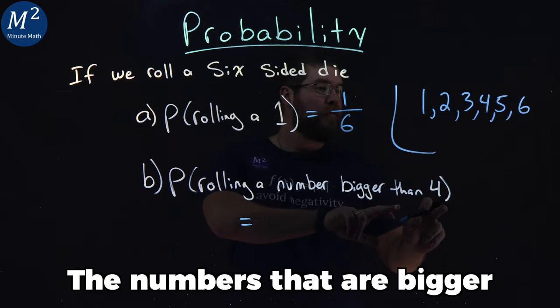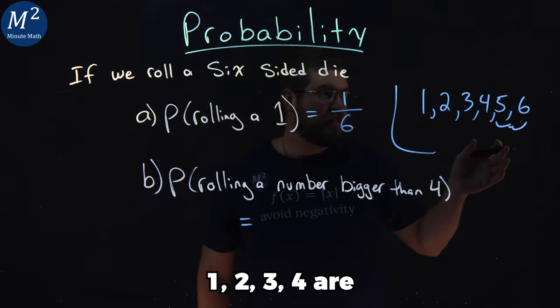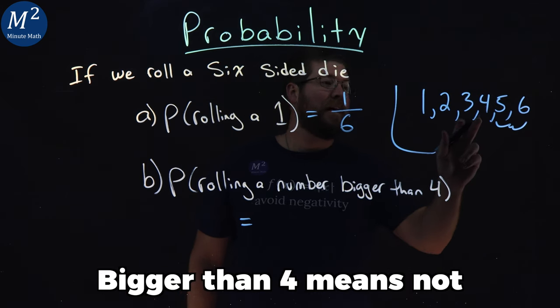The numbers that are bigger than four are just the five and the six. One, two, three, four are not bigger than four, right? Bigger than four means not including four.